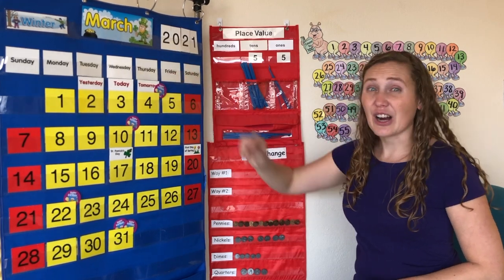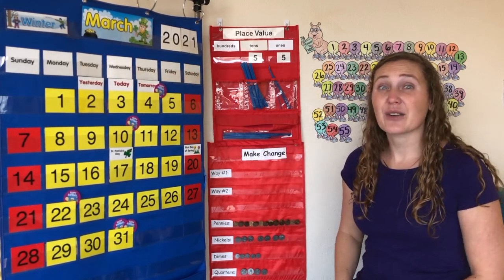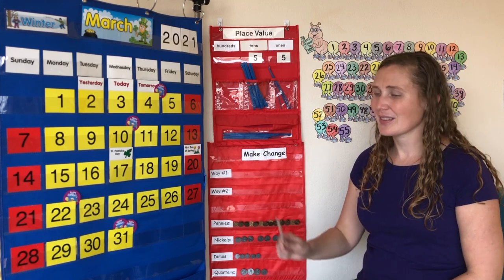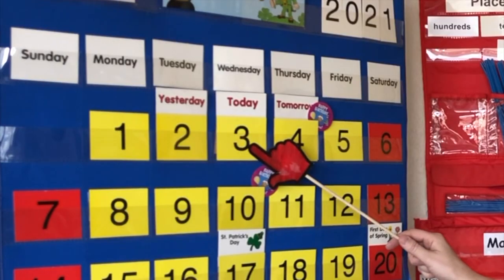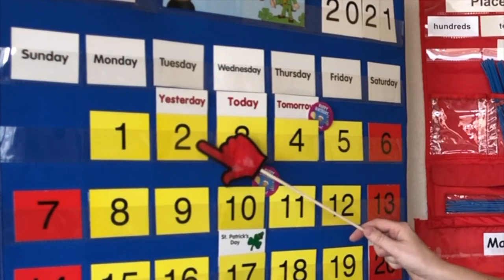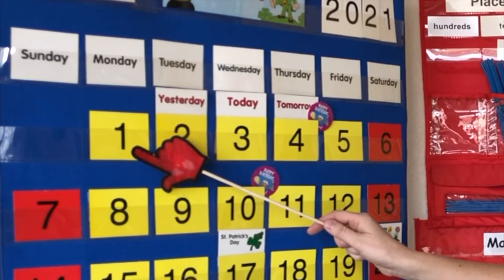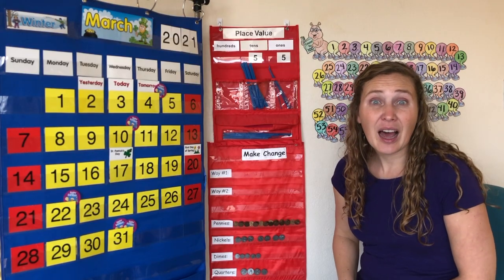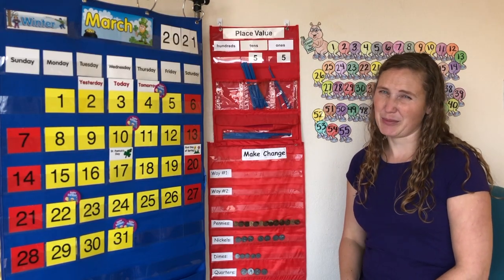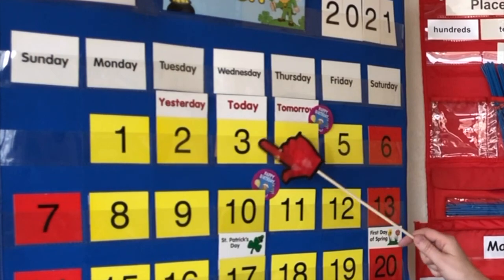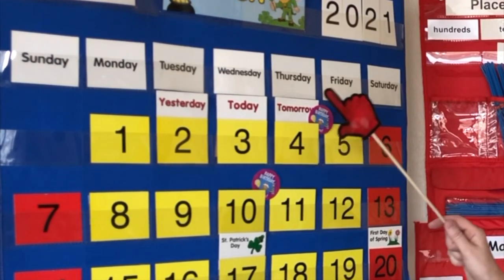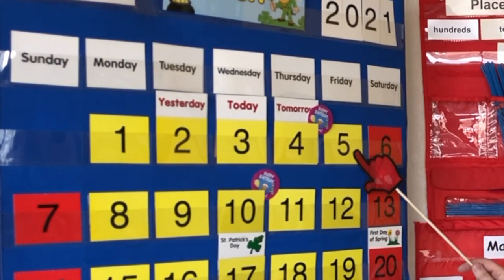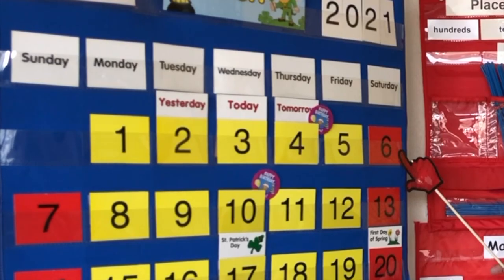Are you ready to count down from three with me? Three, two, one. Let's count up from the number three together. Three, four, five, six.